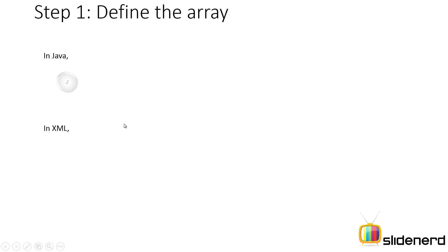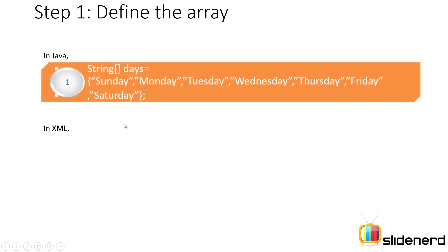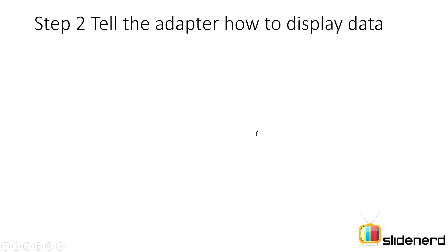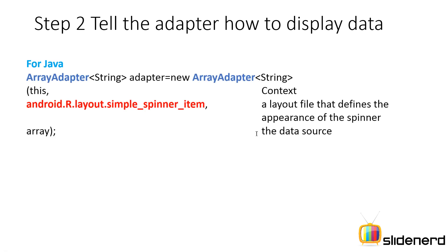Step 1 — define the array in Java or in XML. In Java you can have a string array directly. In XML you can define a string array with a name attribute, for example name equals 'days'. You need this name attribute because at some point you'll pull this array from XML into Java and you need a way to refer to it.